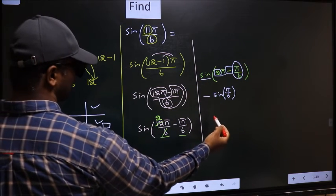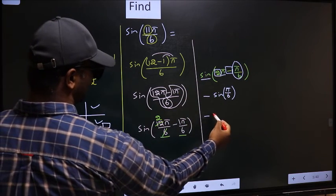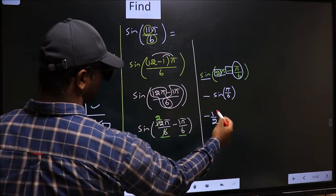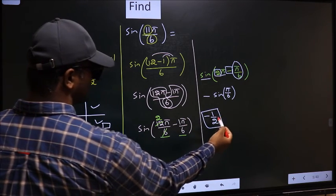So negative sine π by 6 is 1 by 2. So this is our answer.